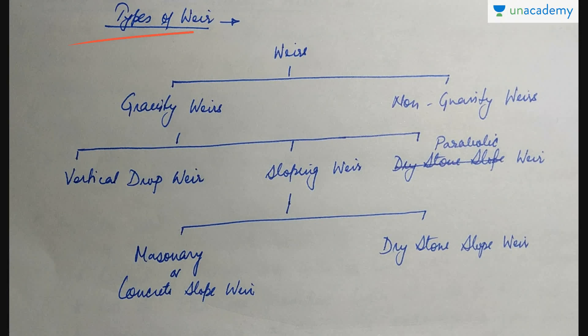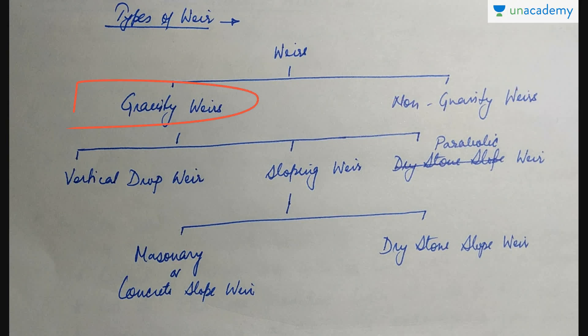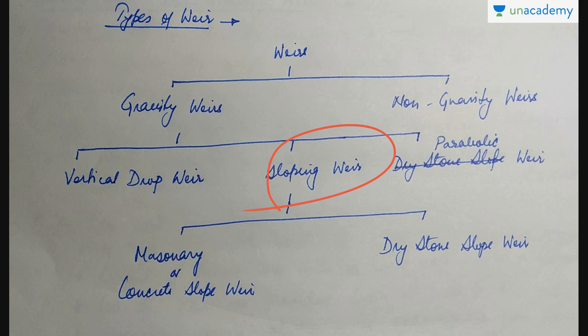The different types of weirs: it can be a gravity weir or a non-gravity weir. Gravity weirs can further be classified into three types: it can be a vertical drop weir, a sloping weir, or a parabolic weir. Sloping weirs can also be of two types — it can be a masonry or concrete slope weir, or it can be a dry stone slope weir.